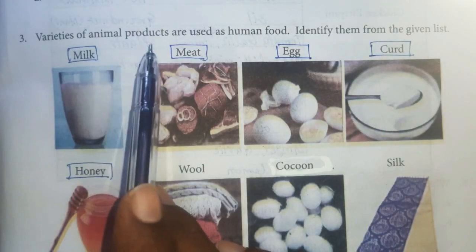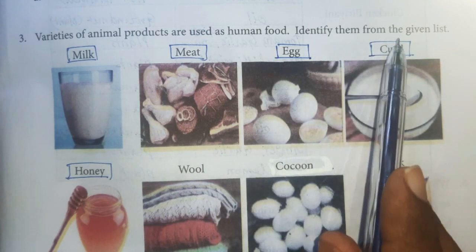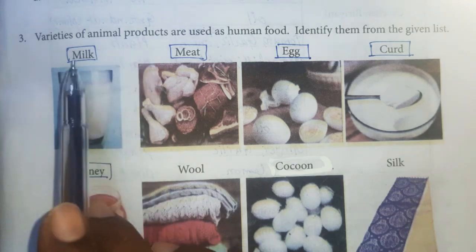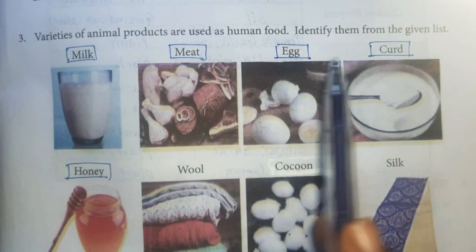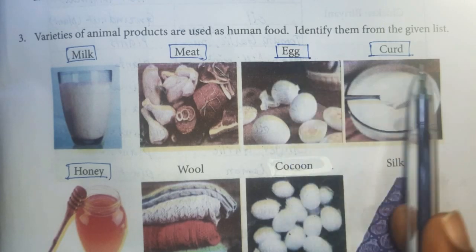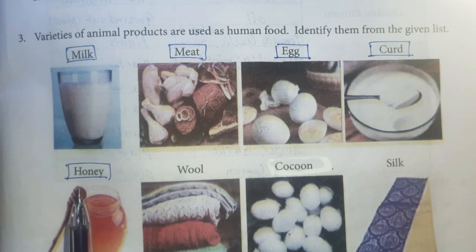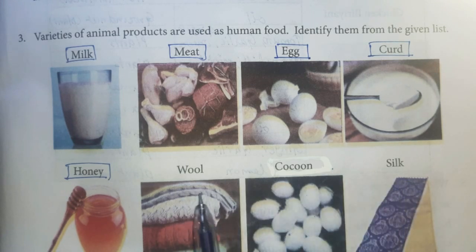Question No. 3: Varieties of animal products are used as human food. Identify them from the given list. Milk is an animal product used as food. Meat is an animal product used as human food. Egg is an animal product used as human food. Cod is an animal product used as human food. Honey is an animal product used as human food. Wool, cocoon, and silk are animal products but they are not used for human food.